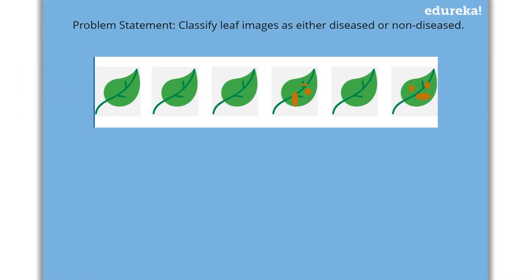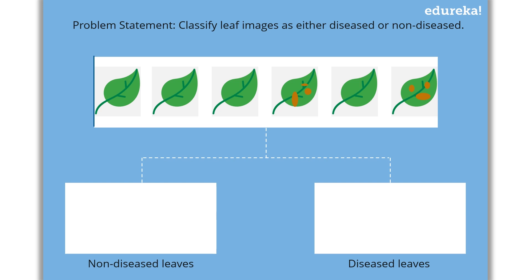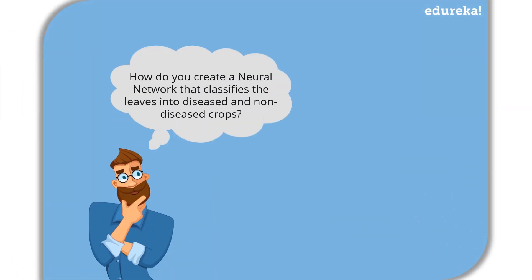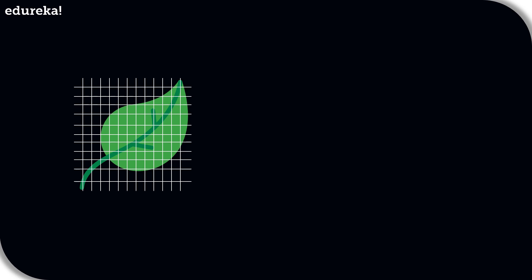Let's understand neural networks with a small example. Consider a scenario where you have been given a set of labeled images and you have to classify them into two classes — one class containing images of non-diseased leaves and the other class containing images of diseased leaves. The process always begins with processing and transforming the input so that it can be easily processed. In our case, each leaf image will be broken down into pixels depending on the dimension of the image.